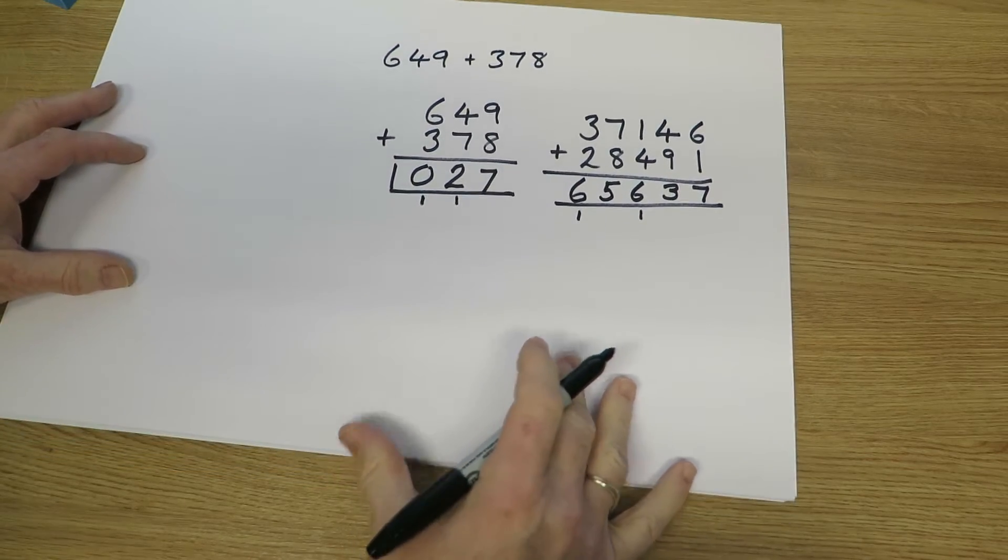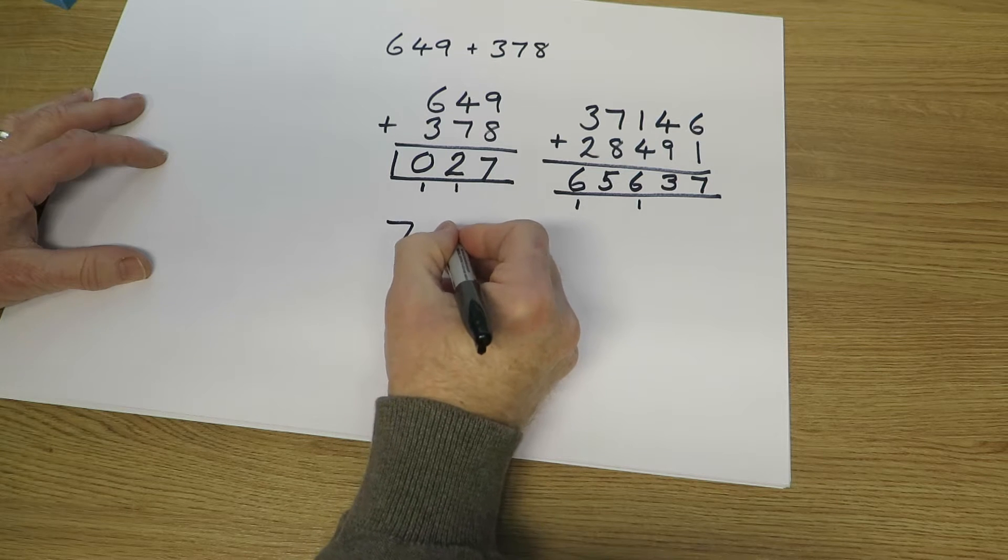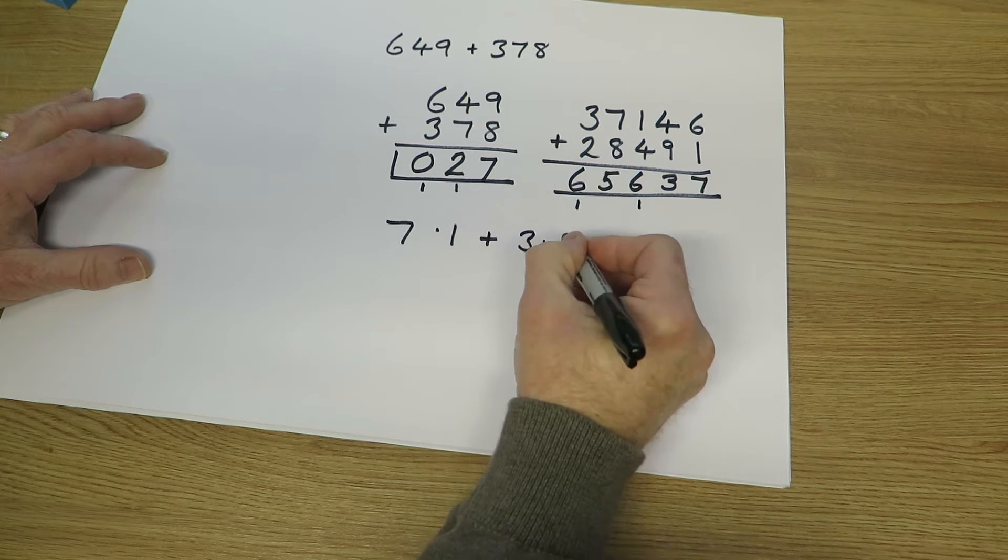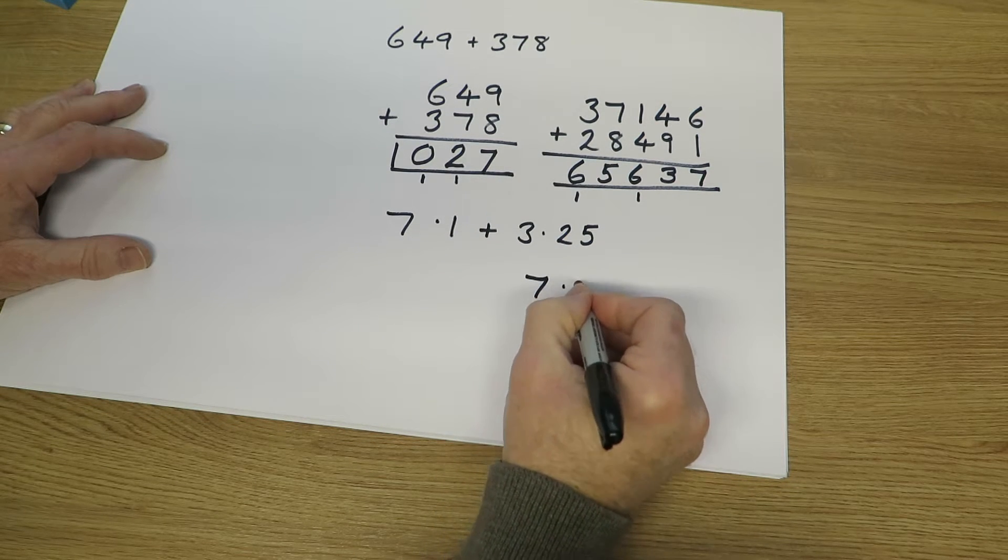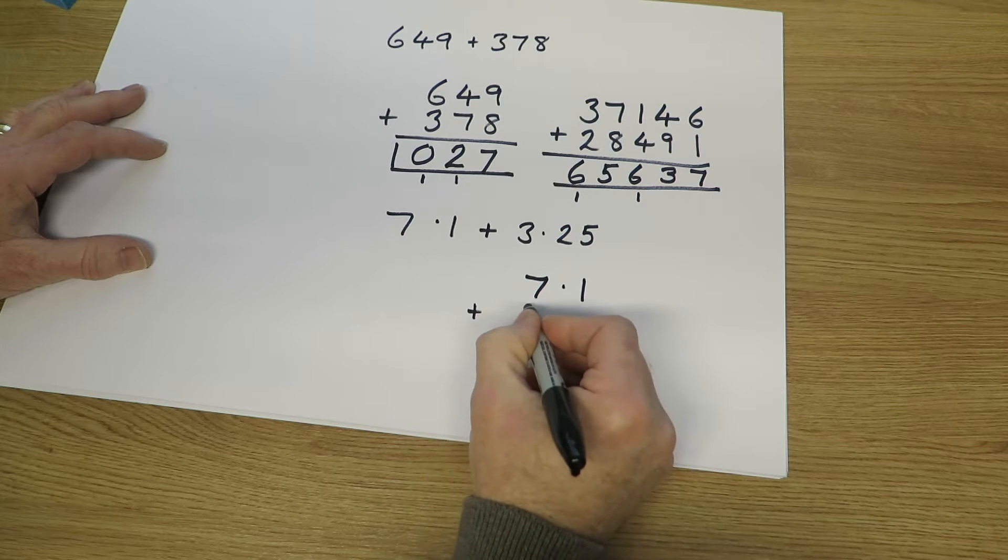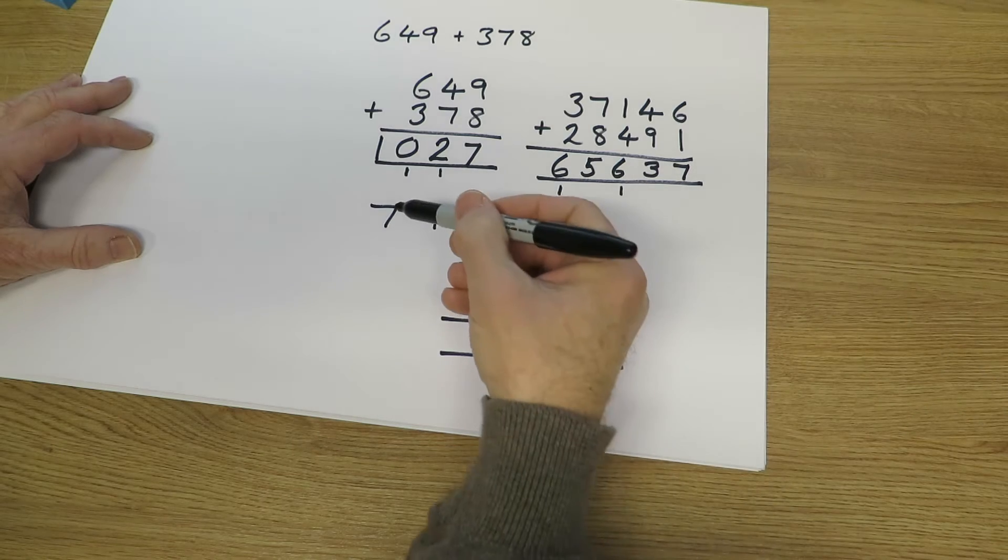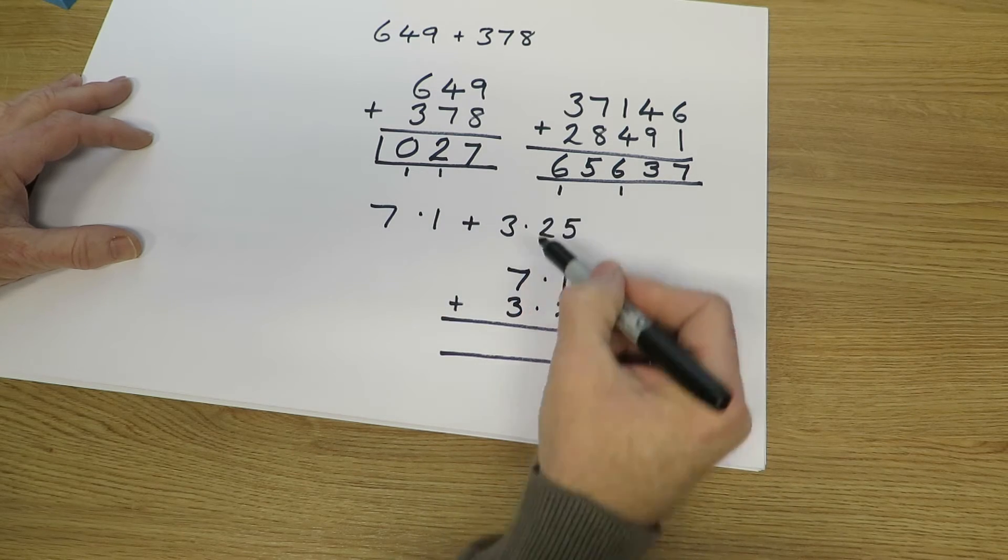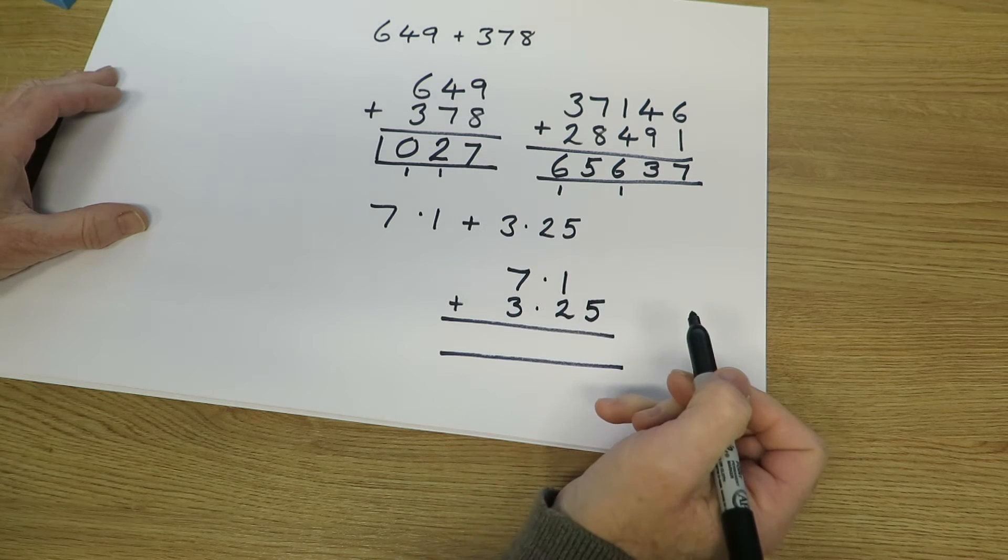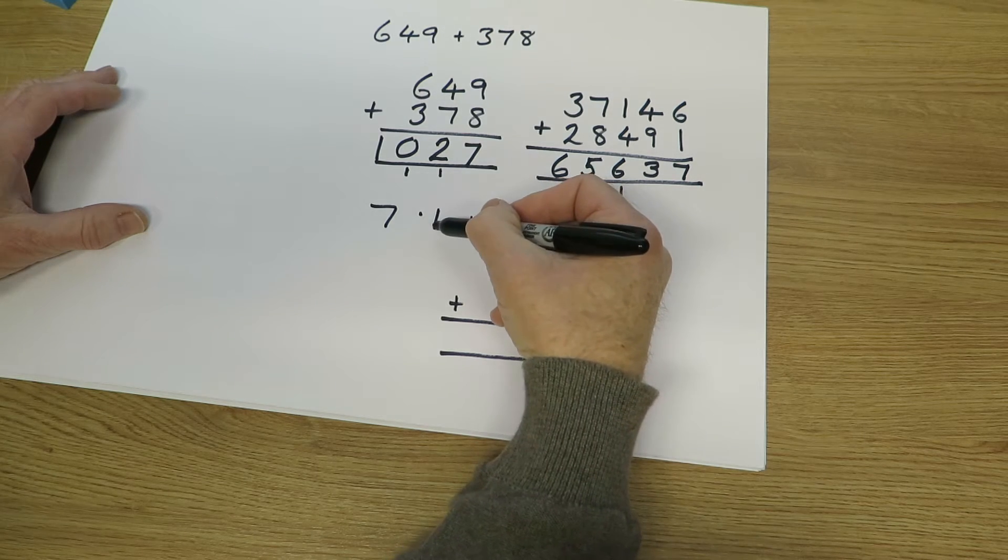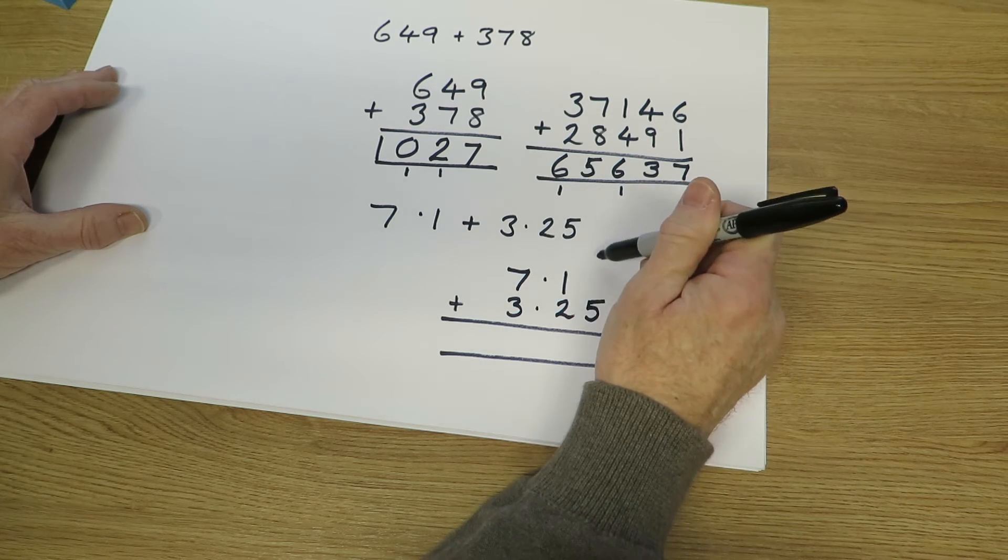They're also able to move on to smaller numbers involving decimals. Looking at questions such as 7.1 plus 3.25 they will know how to use columns to find the answer. So 7.1 plus 3.25 and hopefully they'll know that the seven are seven units, the three are three units. I always advise children keep your units in line, keep the decimal points in line and so 7.1 that's one tenth and two tenths so they're shown there and those are five in the hundredths column.